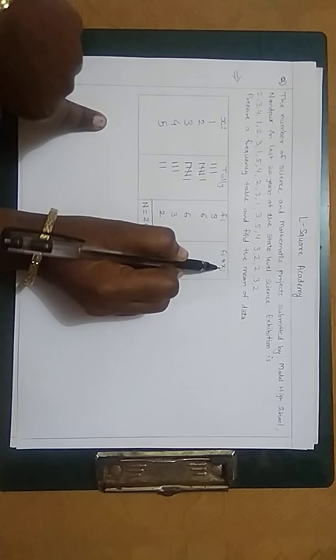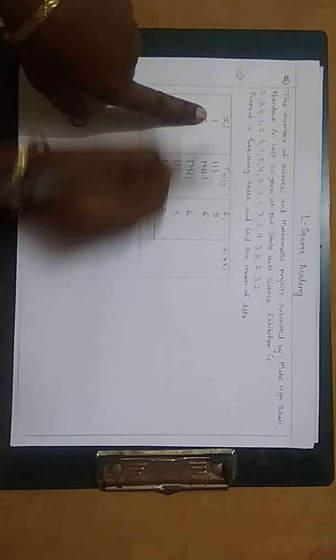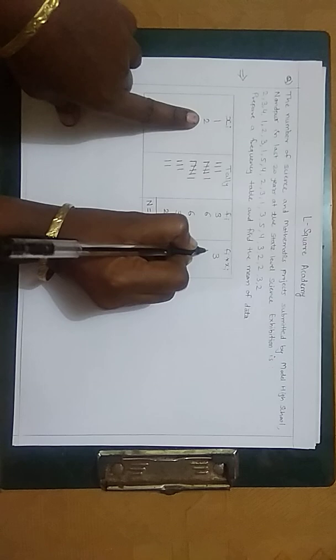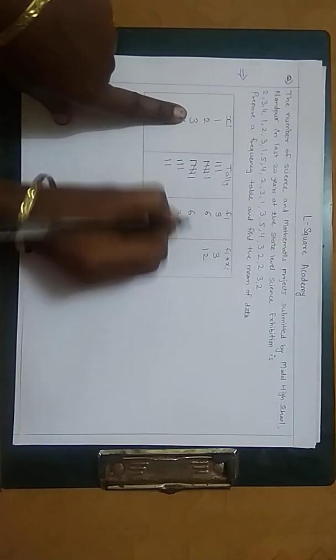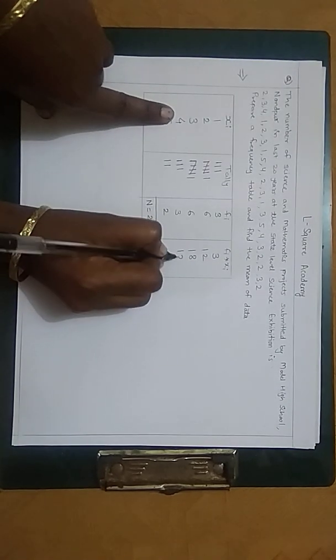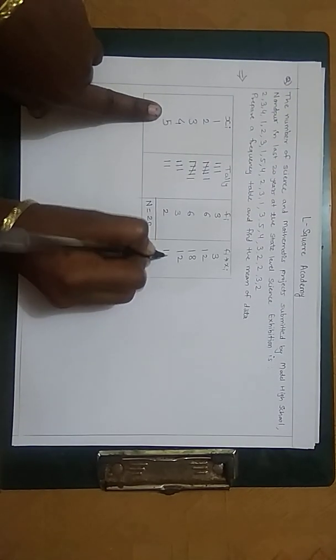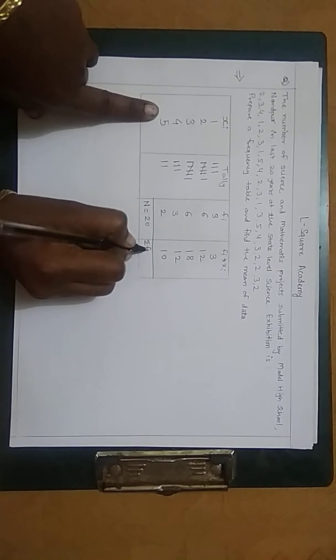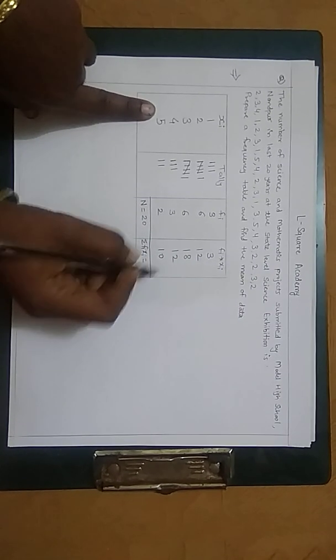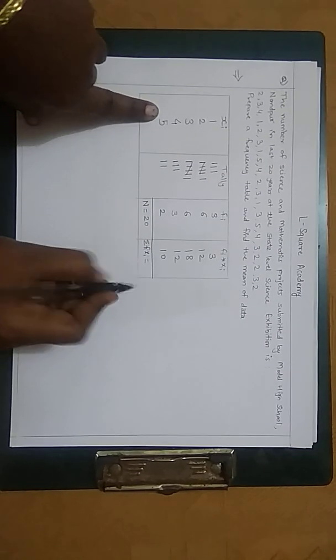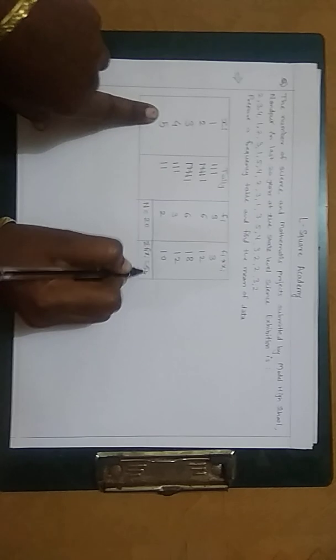Now fi into xi: 1 times 3 is 3, 2 times 6 is 12, 3 times 6 is 18, 4 times 3 is 12, and 5 times 2 is 10. Now here we have to calculate summation of fi xi, which means the addition of all these numbers. When we calculate it, the addition is 55.